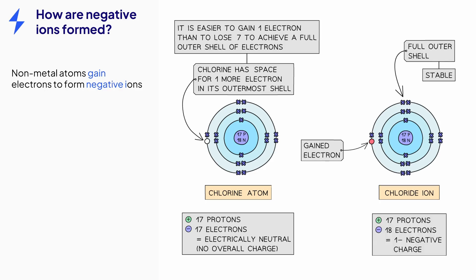Now it has 18 electrons and 17 protons, giving it one more electron than protons. So it forms a chloride ion with a 1 minus charge. If you are asked to draw an ion, it is really important that you remember to put the square brackets around the ion and show the correct charge in the top right-hand corner. Otherwise, you will lose marks in an exam.